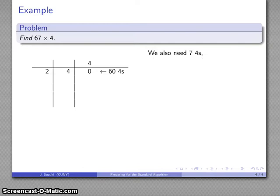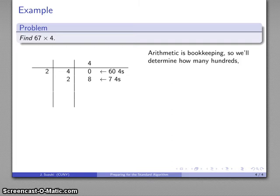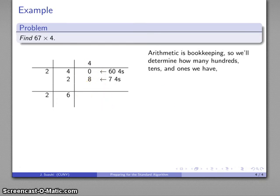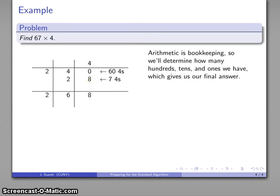I also need 7 4s, and that's going to be 28. And again, I should bundle and trade. So there's my 60 4s, my 7 4s. Arithmetic is bookkeeping, so I want to determine how many of each unit I have. So here I have 200s, I have 6 10s, and I have 8 1s. And my product is going to be 67 times 4, 200s, 6 10s, 8 1s, 268.